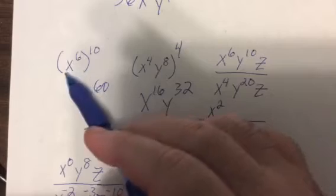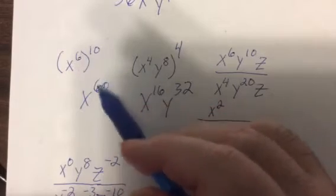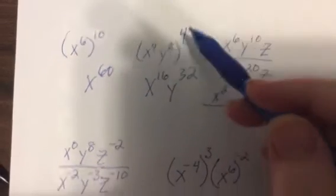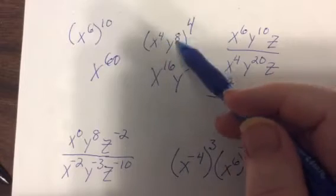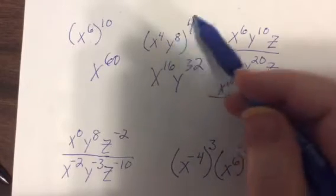x to the sixth to the tenth - you multiply the powers. When you have a product you raise all to that power, or both to that power if there's two, or if there's three you raise all three.